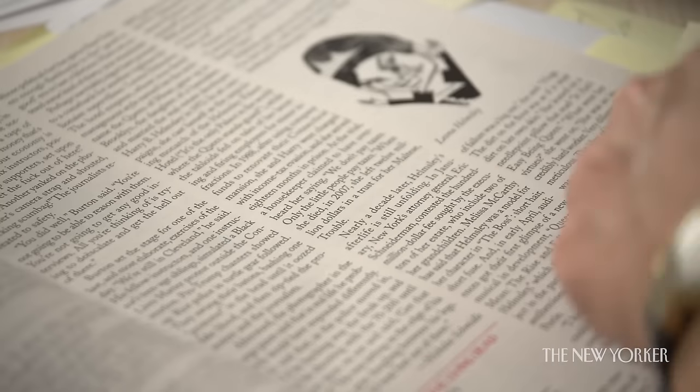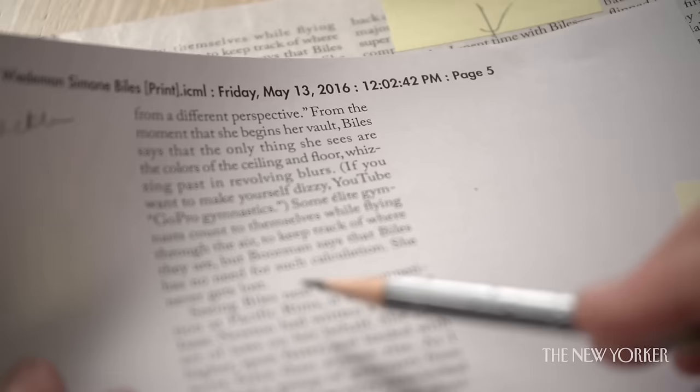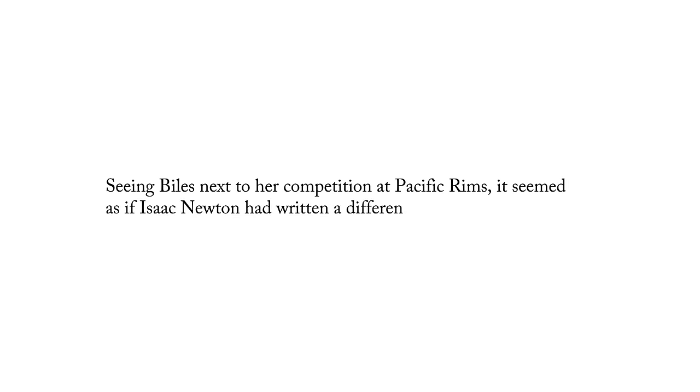I'm going back to this excellent article by Reeves Weideman about Simone Biles. Reeves wrote a few sentences, as writers sometimes do, with dangling participles. And in each case, he fixed it a different way. First, here's the way the sentence was originally written: 'Seeing Biles next to her competition at Pacific Rims, it seemed as if Isaac Newton had written a different set of laws on her behalf.'